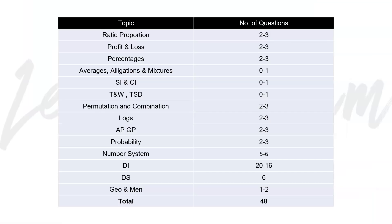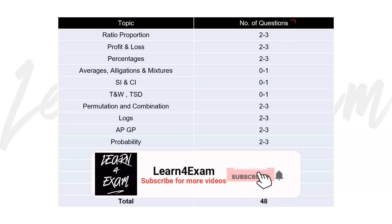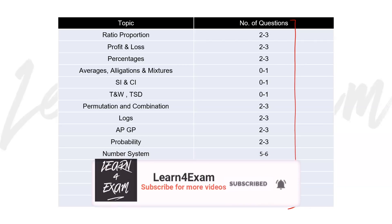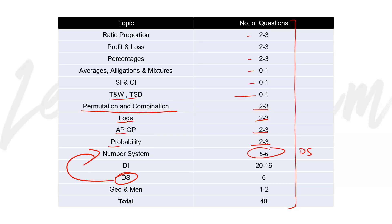If I talk about Window 4, like in Windows 1, 2, and 3, the same level of all questions and the same level of break-up is going to be: 2-3 questions, profit and loss 2-3, percentage 2-3, average/allegation/mixtures 0-1, SI-CI 0-1, time-speed-distance and time and work 0-1, permutation-combination 2-3, logs 2-3, AP-GP 2-3, probability 2-3, number system — DS 2, AC mix, DA B-16 — total of 48, and geometry 1-2.